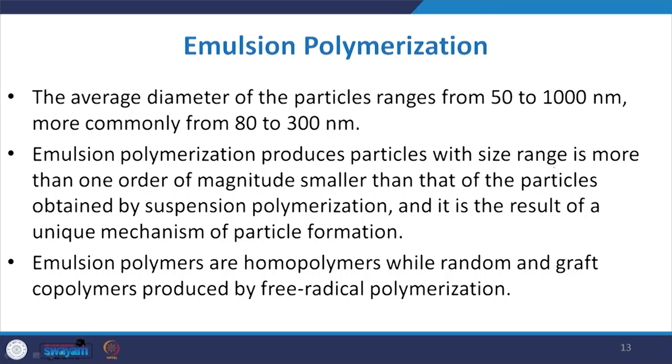The average diameter of particles ranges from 50 to 1000 nanometers, and more commonly for processability, polymer chains range from 80 to 300 nanometers. Emulsion polymerization produces particles with a size range sometimes more than one order of magnitude smaller than particles obtained by suspension polymerization. Emulsion polymers include homopolymers and random and graft copolymers produced by free radical polymerization, and synthetic polymer dispersions are also produced by emulsion polymerization.